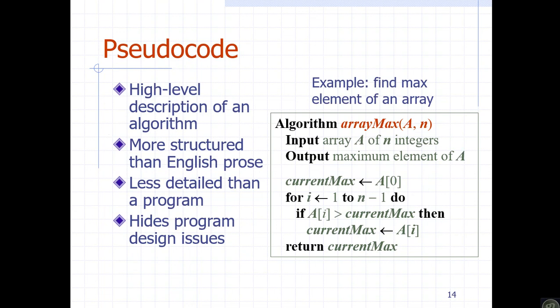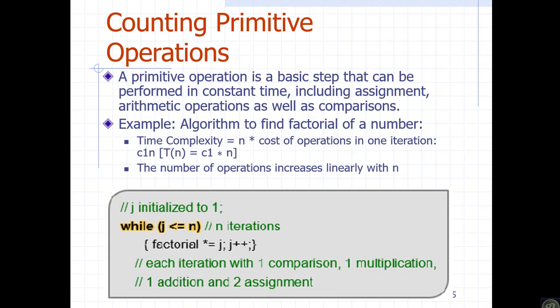An algorithm is a high-level description — it is not the same as a program or code. An algorithm describes the logic and structure of a solution. You can implement the algorithm in a programming language, which gives you the actual program. Pseudocode is at a higher level than programming code. Simply put, an algorithm is a step-by-step procedure to solve a specific problem.